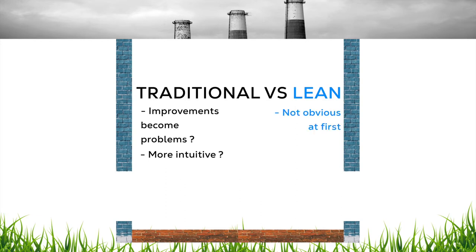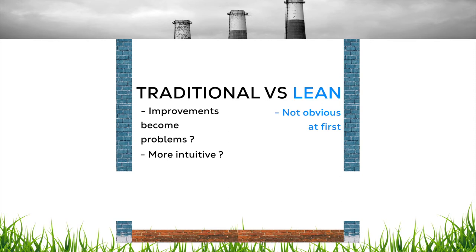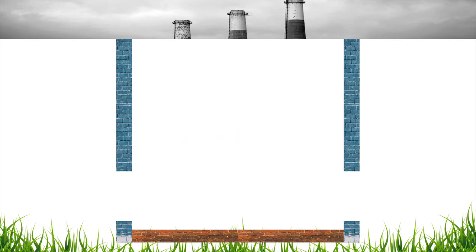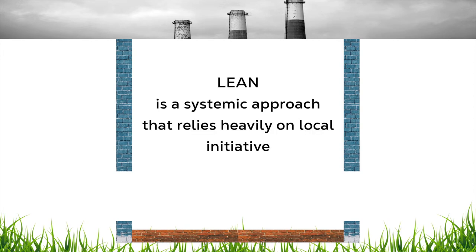Many managers to this day interpret and solve problems in a non-Lean way. They get a local improvement which lulls them into thinking they've solved the issue, but that localized improvement causes bigger problems down the line or to the system as a whole. Lean teaches us how to see the system in its entirety and improve overall performance — not just optimize each piece individually. For what is a localized benefit could very well be an overall detriment.